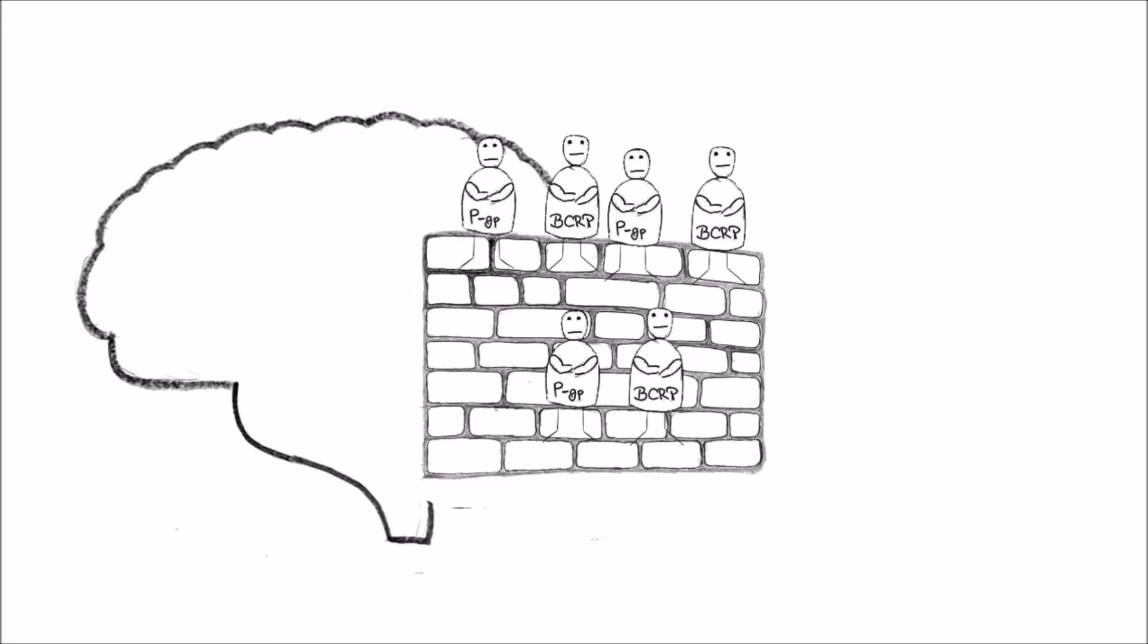This is not the only transport system at the blood-brain barrier. Additionally, there are efflux transporters. Their job is to make sure that everything that snuck past or squeezed through the seals is transported straight back out of the brain.